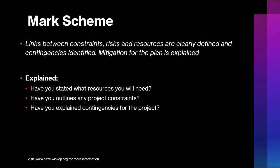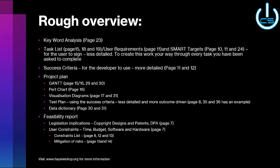The final section of this mark scheme is where holistic marking comes in. I'll be looking for a link between the constraints, risks, and resources you defined, and whether you've made some contingency and mitigation plan. You need to have stated what resources are needed, outlined known project constraints, and clearly explained contingencies. You can't predict the future, but I expect you to have considered what constraints you're likely to come up against.